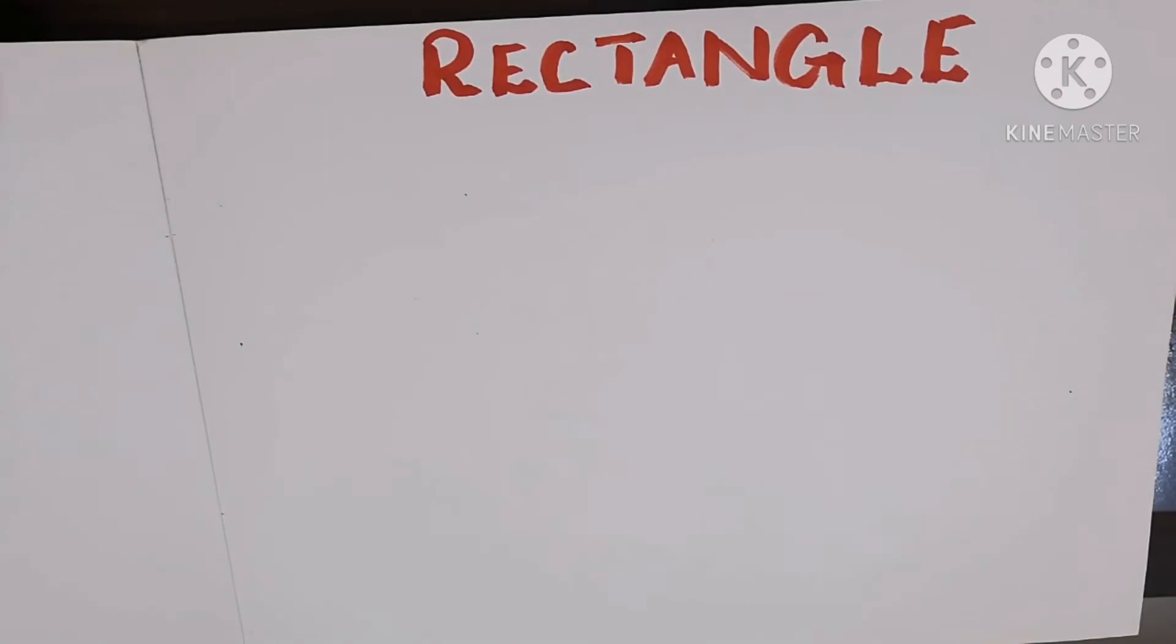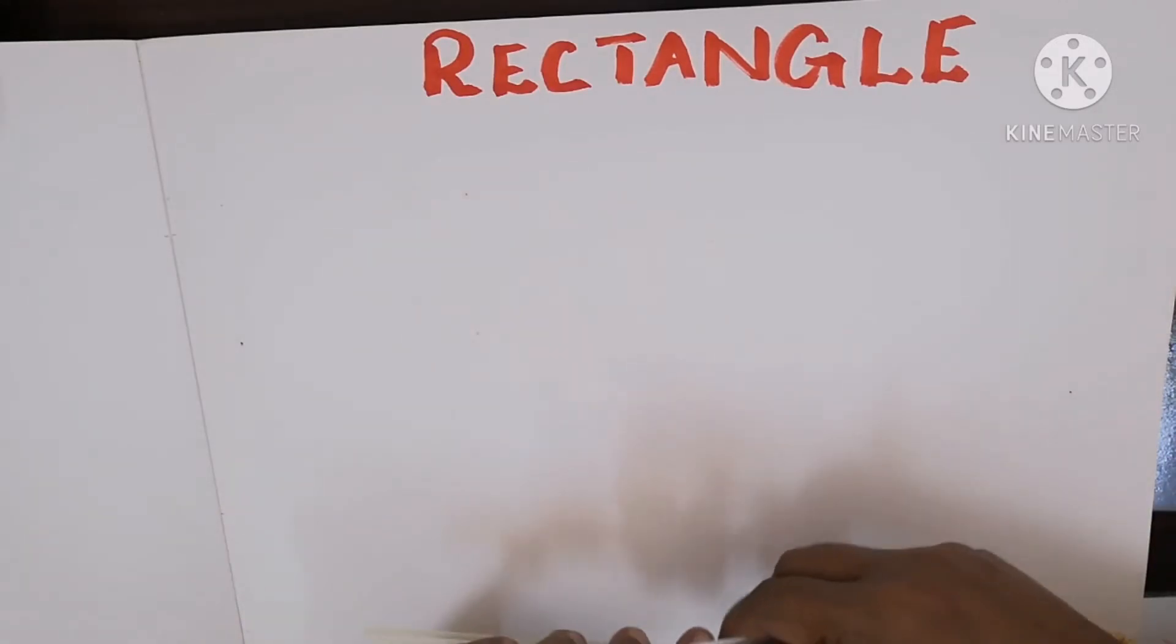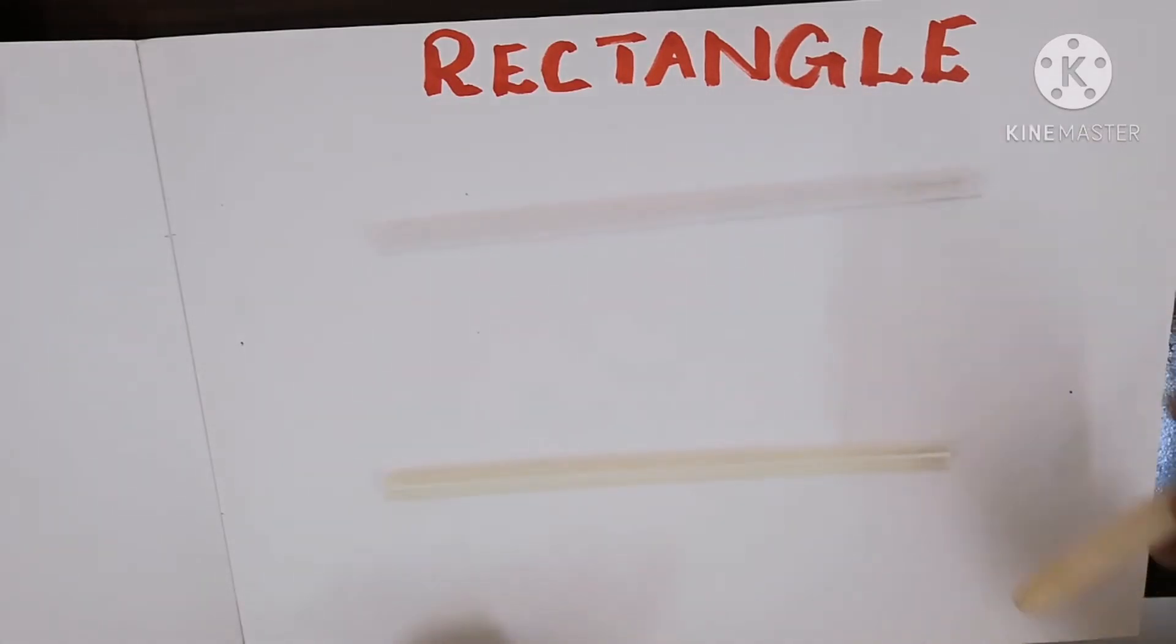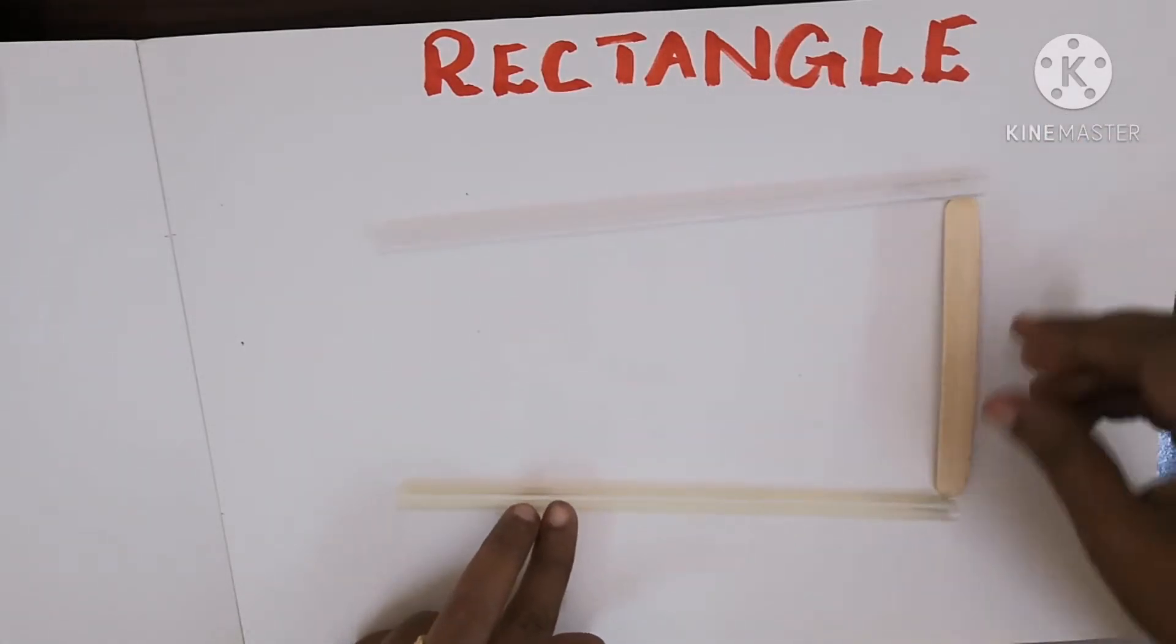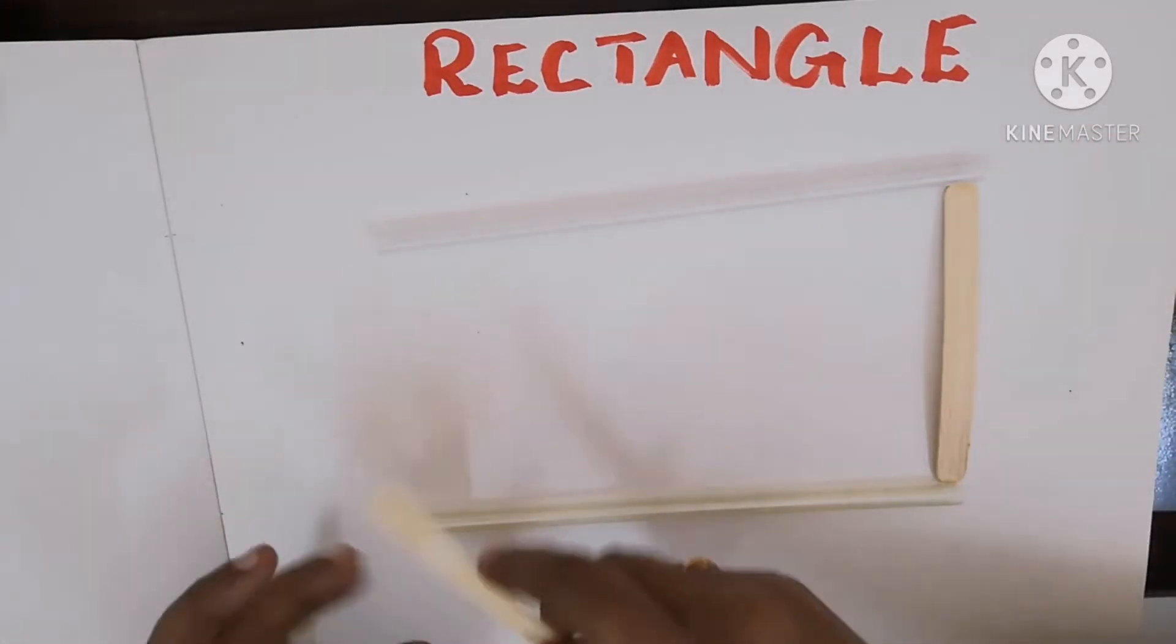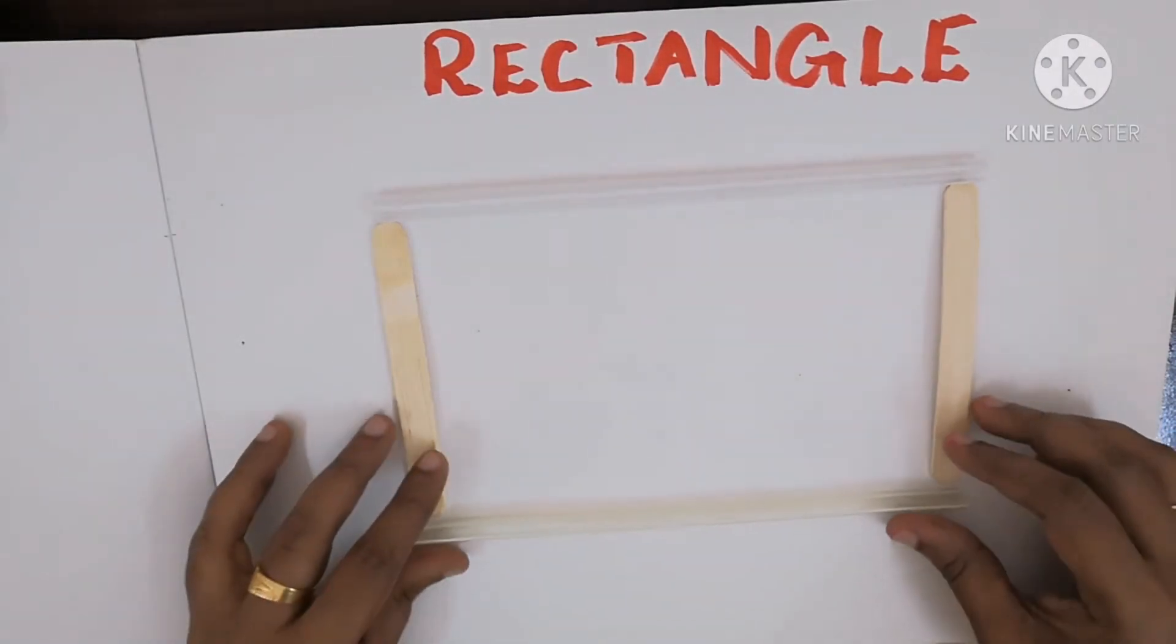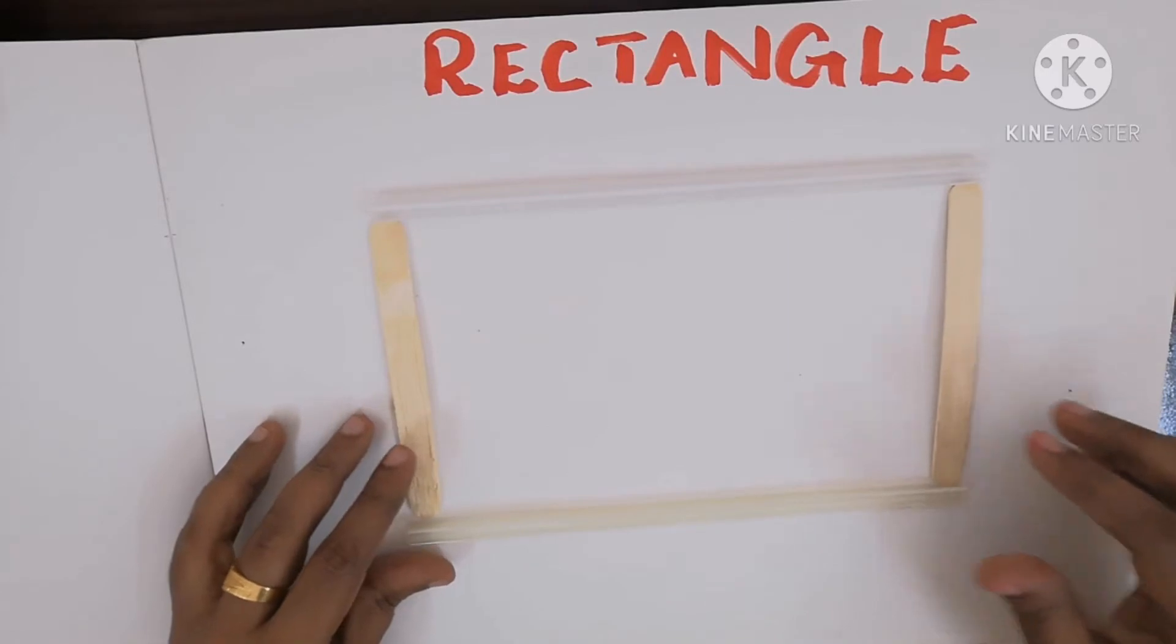Hi kids! Good morning! So we learned the shape rectangle. Kids, look here. Using this straw and ice cream stick, teacher is going to make rectangle. Look here. See? We got rectangle.